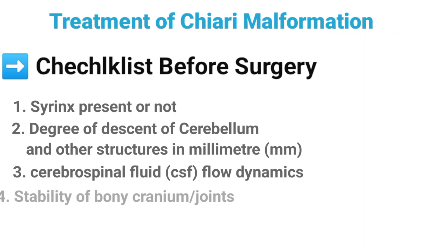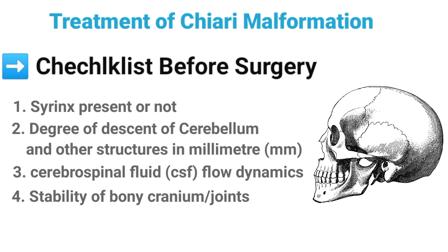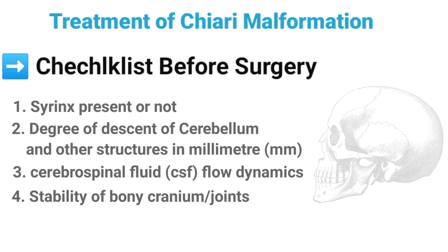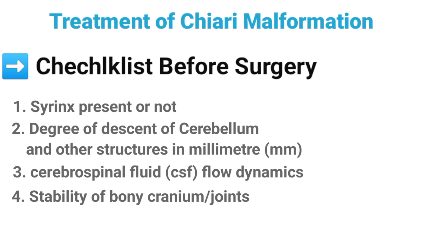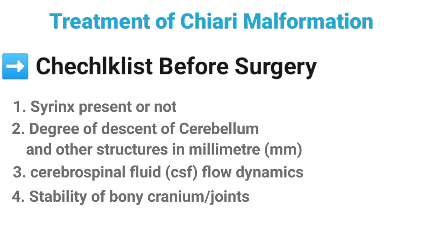On number four, we have to see Cervico-Vertebral Joint Stability. On CT scan, we see the bony stability of different structures, especially the posterior fossa, Cervico-Vertebral Joint, and the cervical spinal cord. The treatment of Chiari malformation isn't so simple that we just diagnose a patient and perform a surgery. So we discuss the plan now.